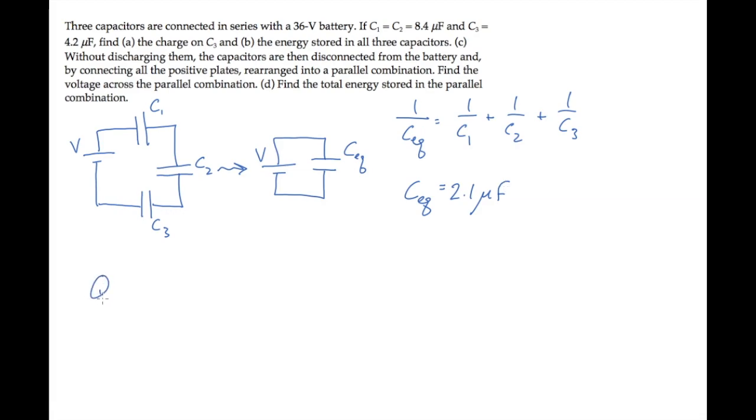Now we can find the charge on this equivalent capacitor. It's C equivalent times the voltage across it, which is the battery voltage, 36 volts. When you calculate this, you find that it is 76 microcoulombs.